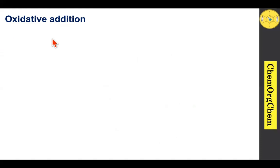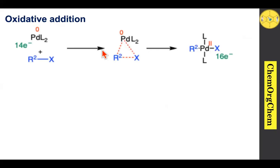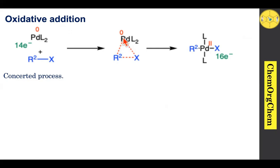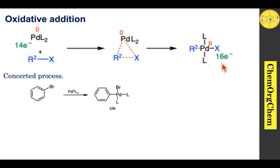For oxidative addition using palladium-based catalysis: palladium(0) is a 14-electron species that interacts with an organohalide via a concerted process. The palladium-to-carbon new bond forms simultaneously as the carbon-halogen bond breaks, and the palladium-halogen bond forms. This concerted process produces the corresponding 16-electron species. For example, bromobenzene initially produces a cis complex, which then undergoes isomerization to produce the trans complex.